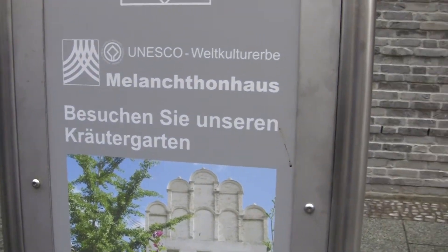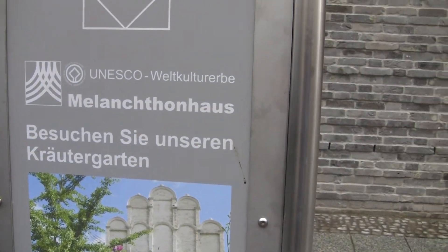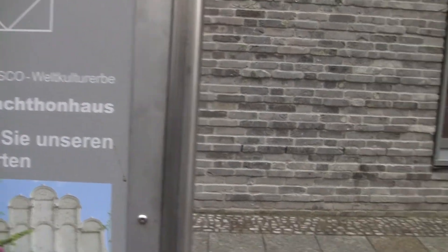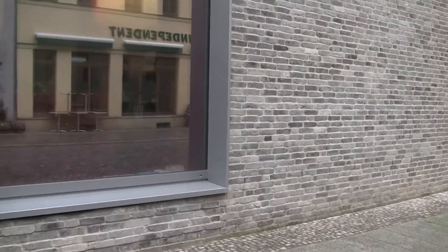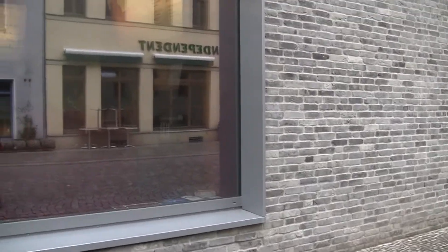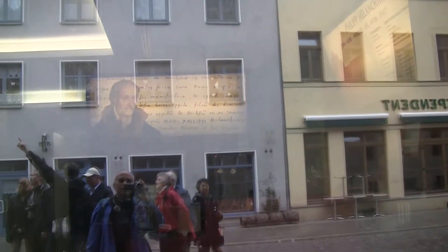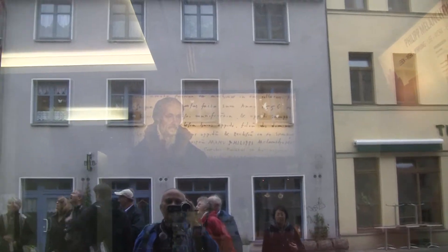Here you can see Philip, and this is his home. This is the house of Philip Melanchthon. The rest is still there. It's a nice residence building.